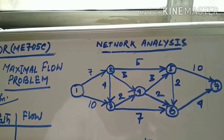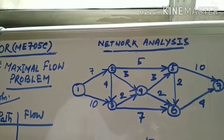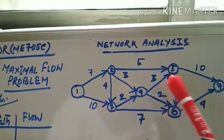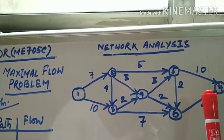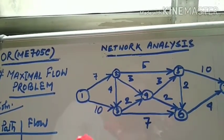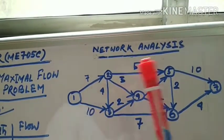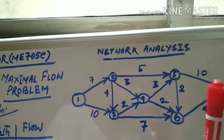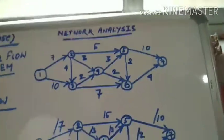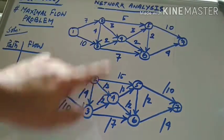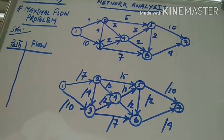Today we have the last one of the particular network analysis module. This is the maximum flow problem. Over here you can see this represents a network with nodes and activities as well. The weightages are given accordingly. Now we have to proceed from source node one and reach the destination node seven, and we have to find the maximum flow. In order to do that we have to draw the network, which I have already drawn below. So let us know the rules of drawing and calculating the maximum flow.